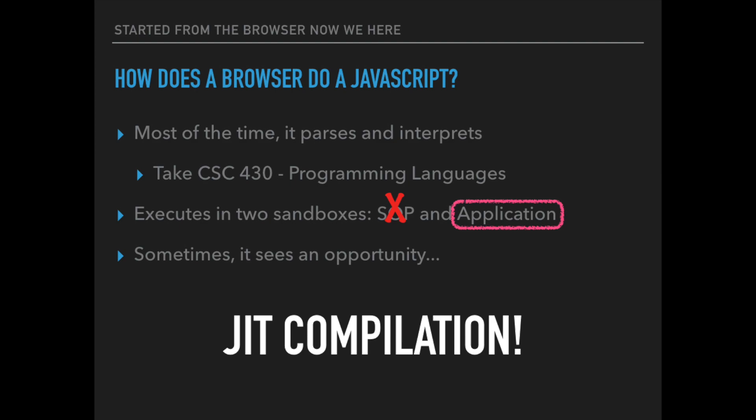Most of the time the browser downloads JavaScript from a web page and basically reads the code and runs it. If you want to learn more about that, I'd highly recommend Computer Science 430, taught by Dr. Keen and Dr. Clements. For our purposes, we're going to be talking about the security of this system. You may have heard of same-origin policy, but we're not looking at that security stack — we're looking at what happens at the application level and trying to exploit the browser itself.